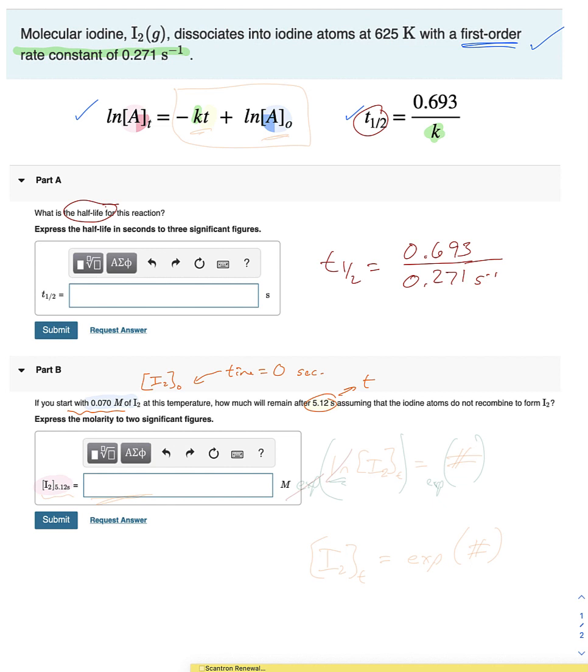What we want to know is the amount of the iodine that's left over at 5.12 seconds. So just to highlight a few things, because we're going to be using this equation here.